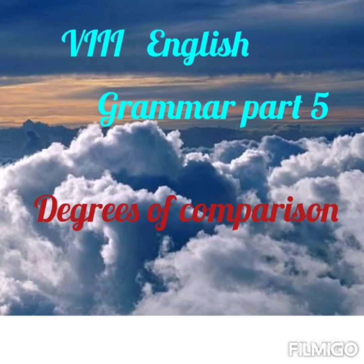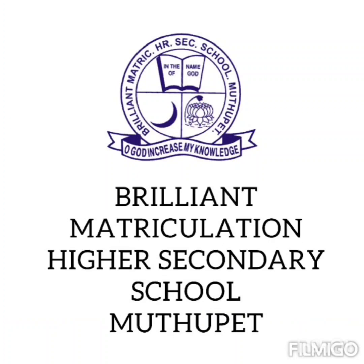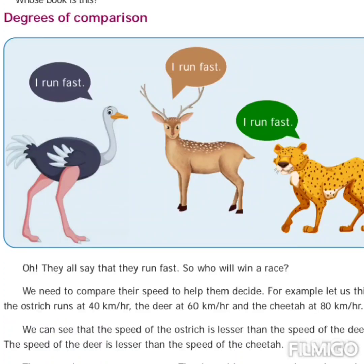My dear students, next we see the next part of the grammar section: degrees of comparison. We have studied the kinds of adjectives. These adjectives are used to compare nouns and pronouns. In this picture, ostrich, deer, and cheetah each say they run fast, but we need to compare their speeds. For this we use adjectives. There are three ways to compare: positive, comparative, and superlative — these are known as degrees of comparison.